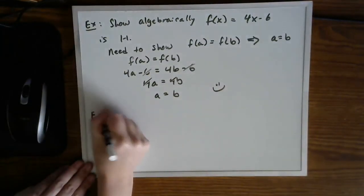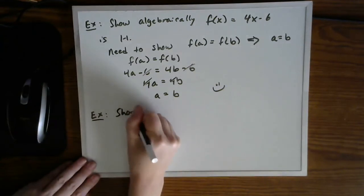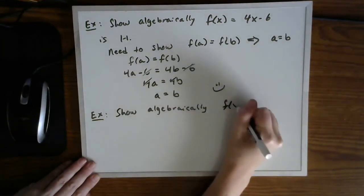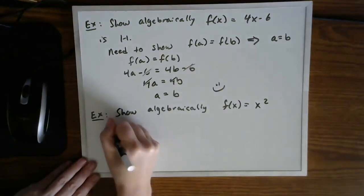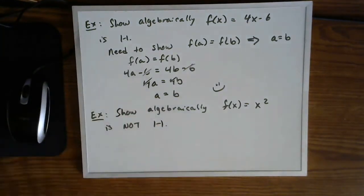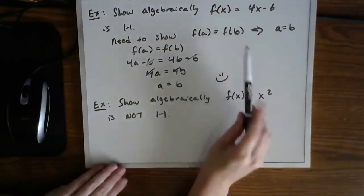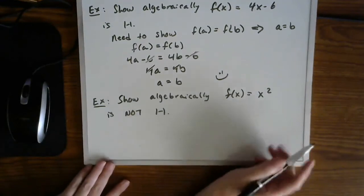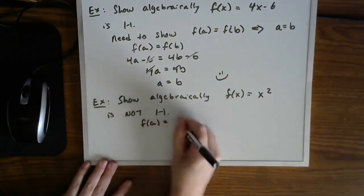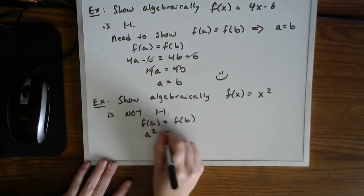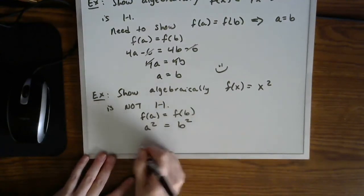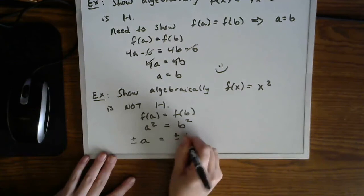So let's go back to our quadratic. Let's show algebraically that the parabola is not one-to-one. That way you can kind of compare and contrast. So what we'll show in this example is that if we start with f of a equaling f of b, then this might not be the only solution. So f of a equals f of b implies that a squared equals b squared. But here's where the problem lies. When I square root these things, I have a plus or minus on both sides.